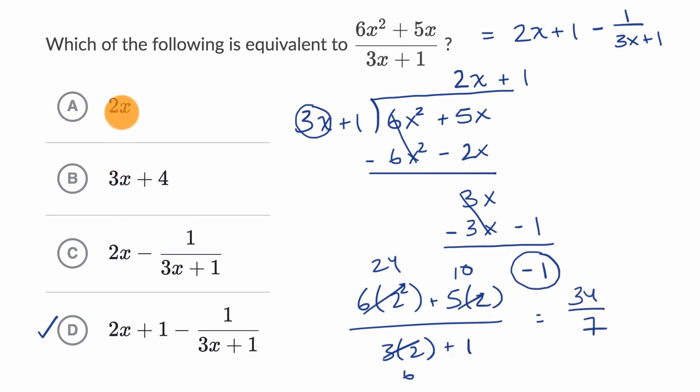Now, if you put two in two x, you just get four. That's not 34 over seven, rule that one out. You put two over here, three times two is six, six plus four is 10, that's not 34 over seven, rule that out.